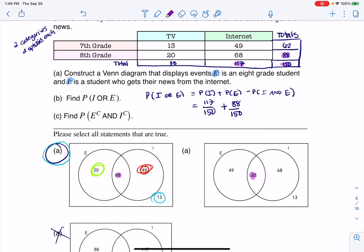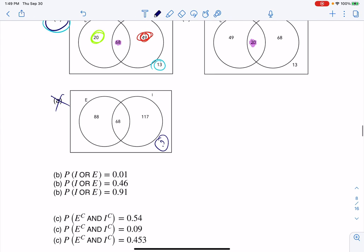And then I need to subtract out any overlap. Well, if I look for the and on a table, that's where the row and column overlap. And you can see there's a 68 there. So I'm going to subtract out 68 out of 150. And when I crunch that number, I get 137 out of 150 or 0.91. And let me go see my options down here. I can see the answer. There it is.